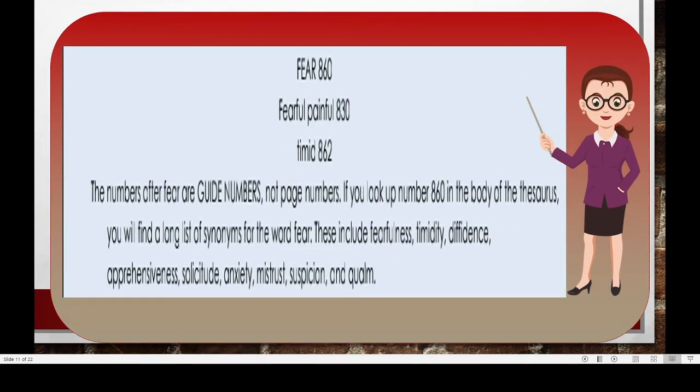For example, you might want a word that means fear — the kind of fear that causes more worry than pain. In this sample sentence: 'Jimmy experienced a certain amount of fear over the upcoming exam,' you need another word for fear. The numbers after the word 'fear' are guide numbers — they are not page numbers. If you look up number 860 in the body of the thesaurus, you will find a long list of synonyms for the word fear. These include fearfulness, humidity, diffidence, apprehensiveness, solicitude, anxiety, mistrust, suspicion, and calm.